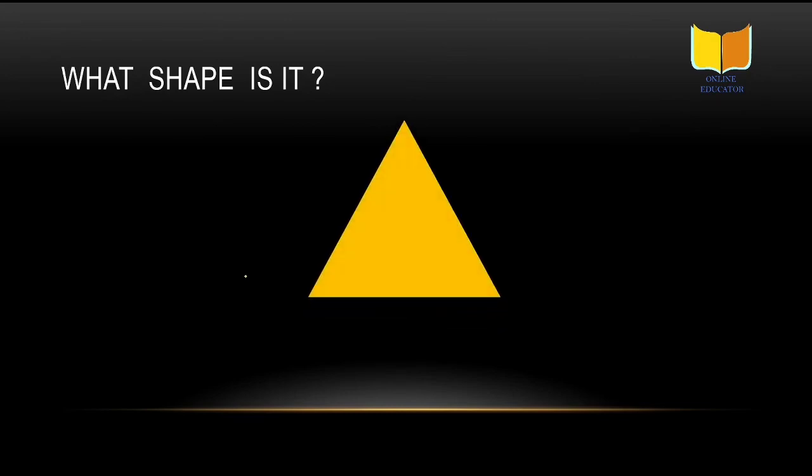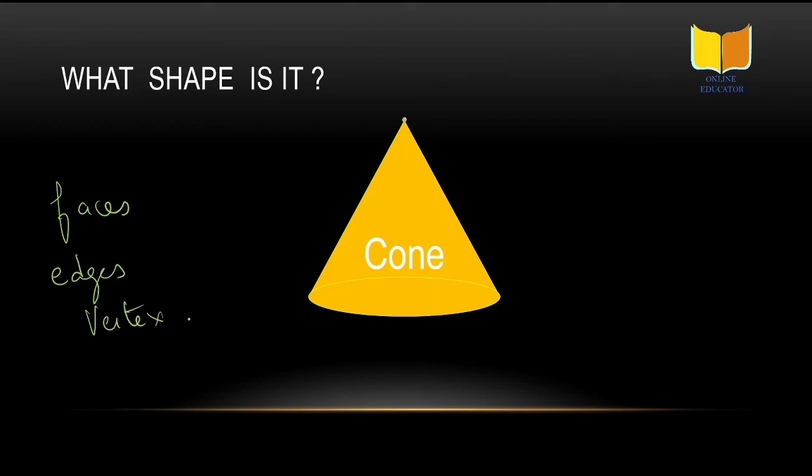Now what shape is it? It's a cone shape. So now how many faces are here, number of edges and the vertex? You can see this is one corner, so it has one vertex. How many edges? One here, one edge. You can see here one edge because it's a shape like this. And it has two faces: one is plane, this is curved. One plane and one curved, so it has two faces.